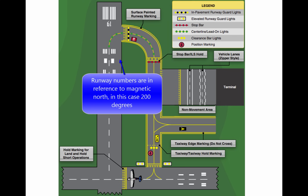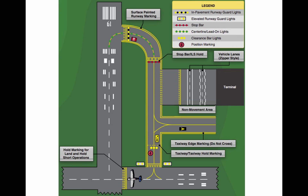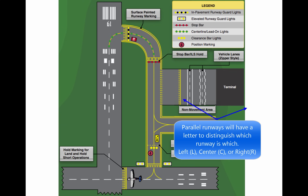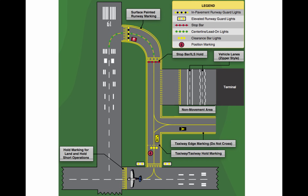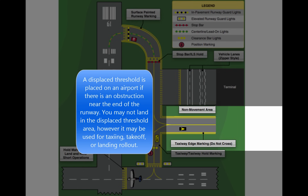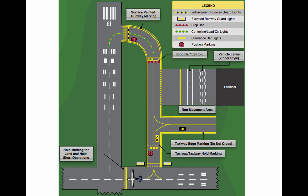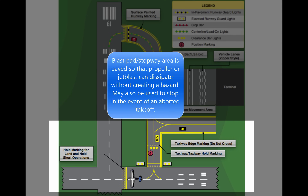Since aircraft are affected by the wind during takeoffs and landings, runways are laid out according to the local prevailing winds. Runway numbers are in reference to magnetic north. Certain airports have two or even three runways laid out in the same direction. These are referred to as parallel runways and are distinguished by a letter added to the runway number, for example runway 36L, 36C, and 36R. Another feature of some runways is a displaced threshold, which may result from an obstruction near the end of the runway. Although this portion of the runway is not to be used for landing, it may be available for taxi, takeoff, or landing rollout. Some airports may have a blast pad or stopway area. The blast pad is an area where propeller or jet blast can dissipate without creating a hazard. The stopway area is paved to provide space for an aircraft to decelerate and stop in the event of an aborted takeoff. These areas cannot be used for takeoff or landing.